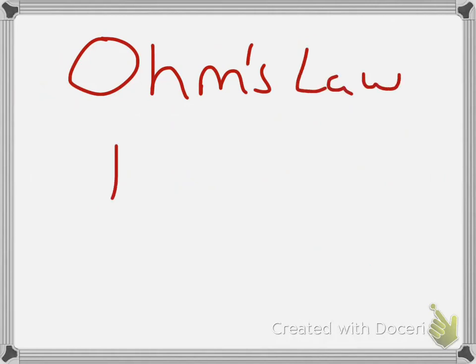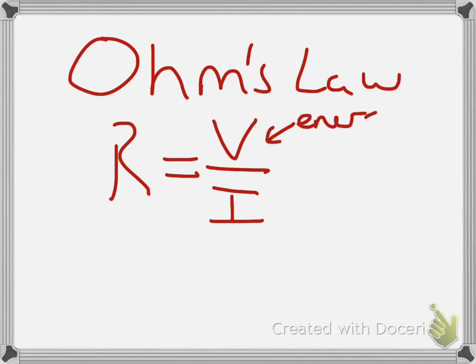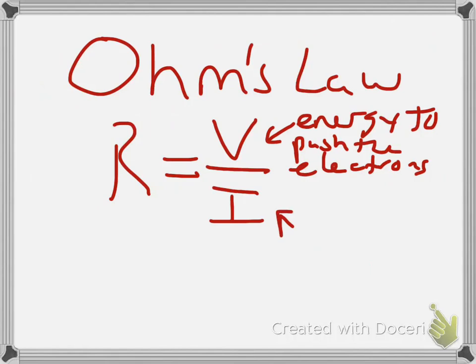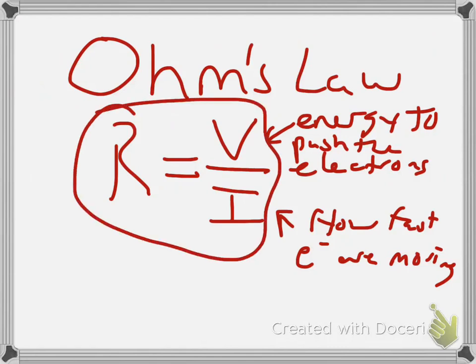Now, if we start taking a look at circuits and how currents and circuits relate to each other, we look at Ohm's Law. And Ohm's Law simply relates the resistance to the voltage and the current. Where voltage is the amount of energy to push the electrons. And current is really just more or less how fast those charges are moving. And it's only electrons that are moving, not protons, of course. And this equation allows us to figure out lots of things when it comes into circuits.